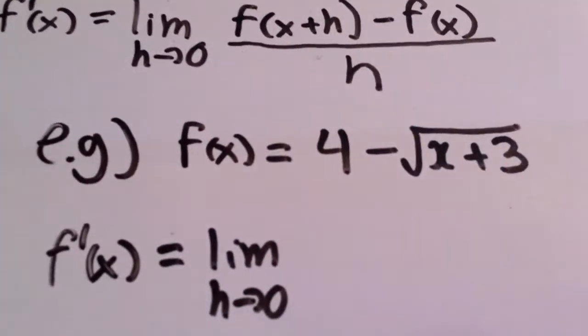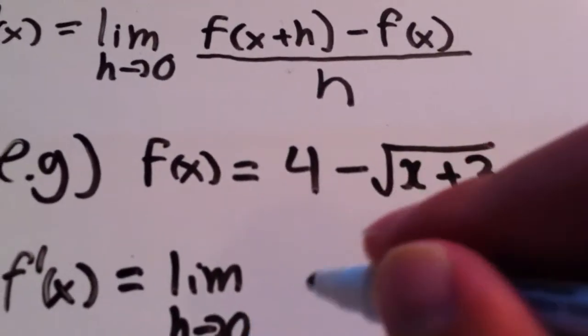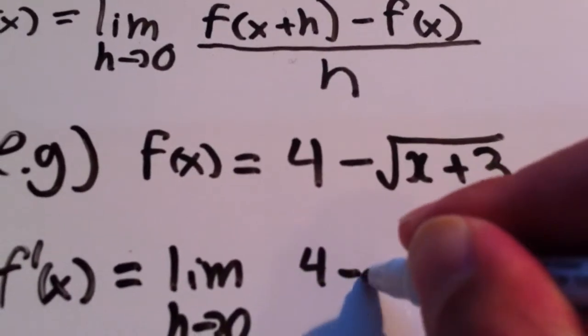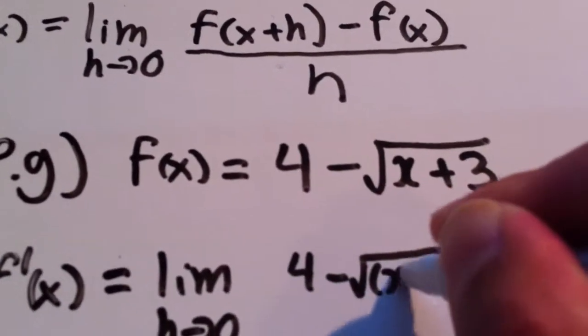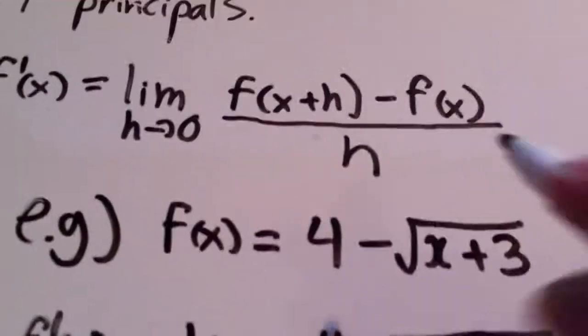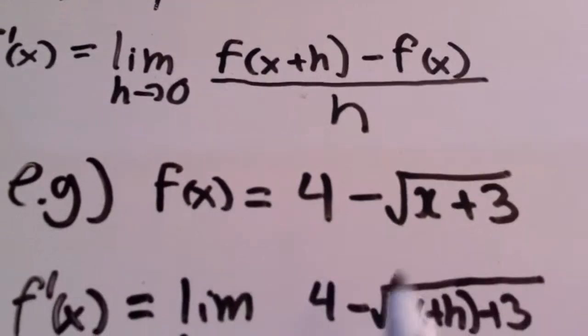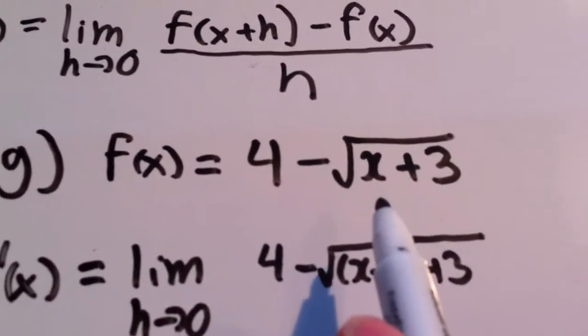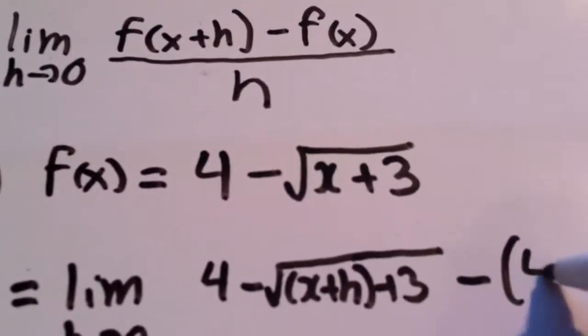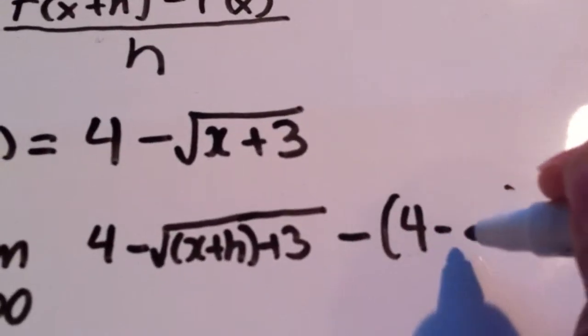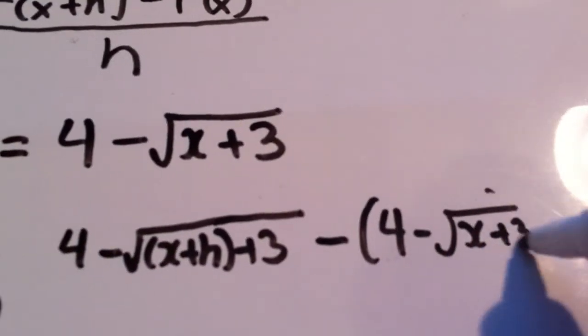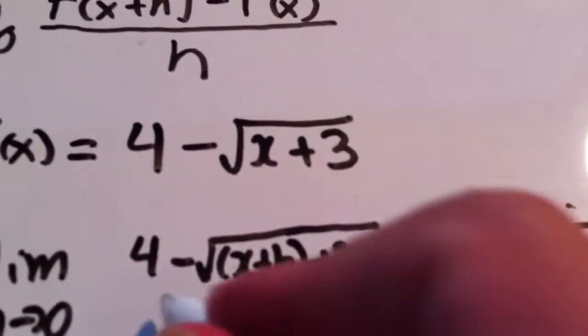f(x+h) would be 4 - √(x+h+3). f(x+h) basically means we input x+h for x. Then it would be minus just regular f(x), so that would be 4 - √(x+3), all being divided by h.